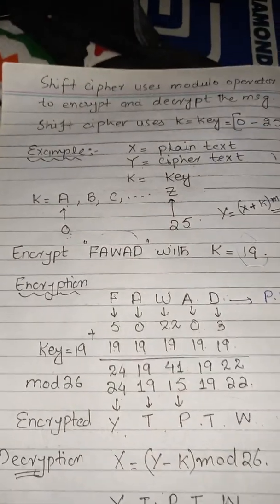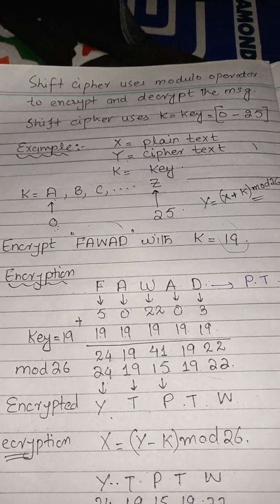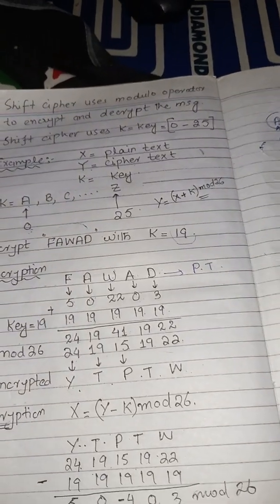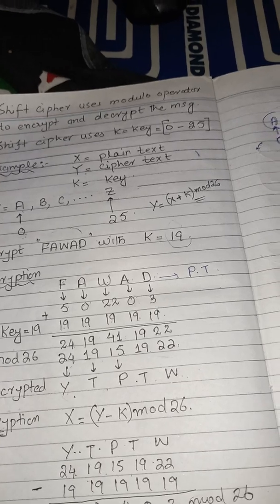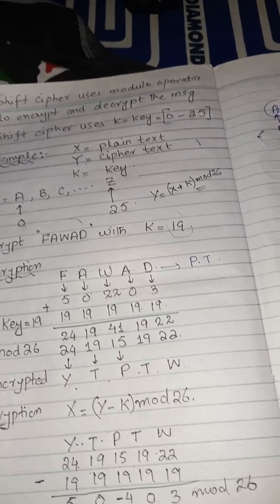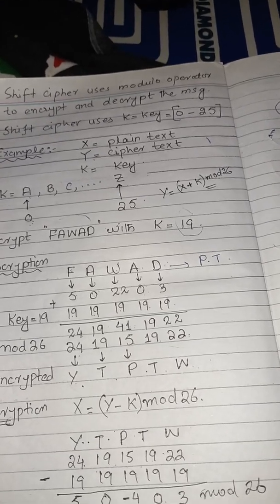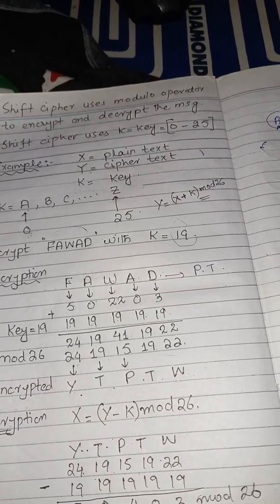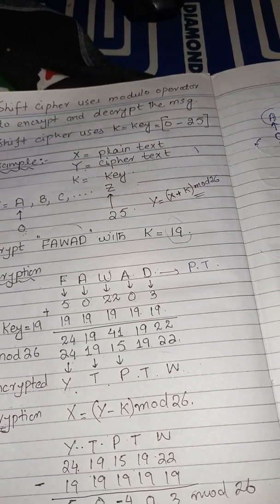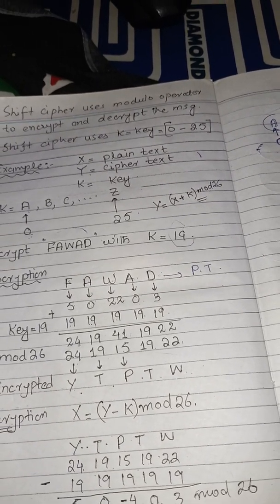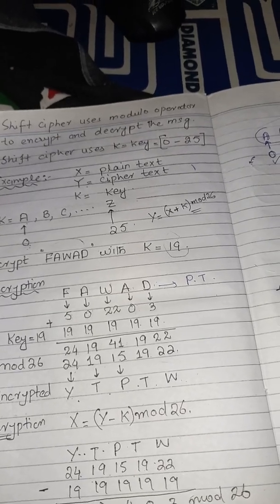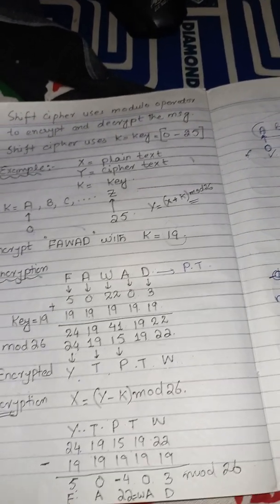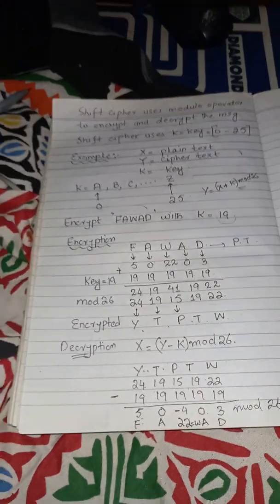This is the simple shift cipher using the modulo operator to encrypt and decrypt a message. The key can range from 0 to 25 — in this question it was given as K equal to 19, but it could be any value like 3 or 4. Thank you so much.